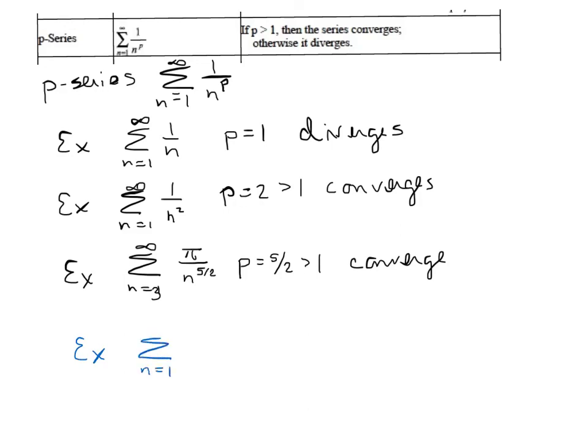Sum from n equals 1 to infinity of 3 to the n all over n squared. So this one sort of looks like geometric, it sort of looks like P series, but it's not actually either. We can't use these rules that we've looked at to figure out convergence or divergence. There are other rules on this table that we'll use to do this one, but in general, just to clarify, this is not geometric, and this is not a P series. And so we can't use those tests. We would have to look elsewhere.